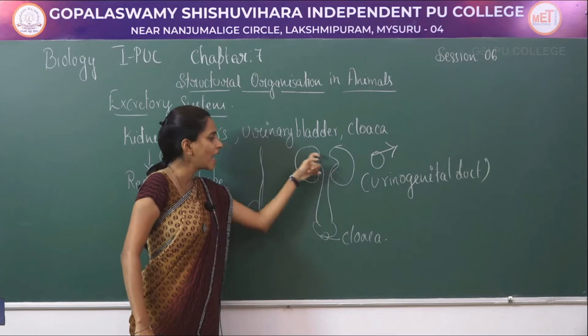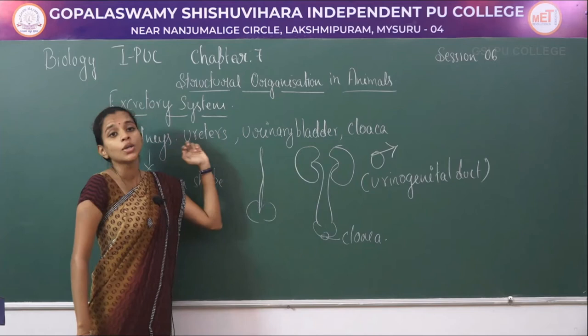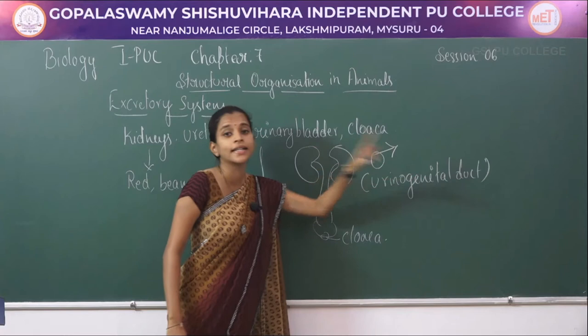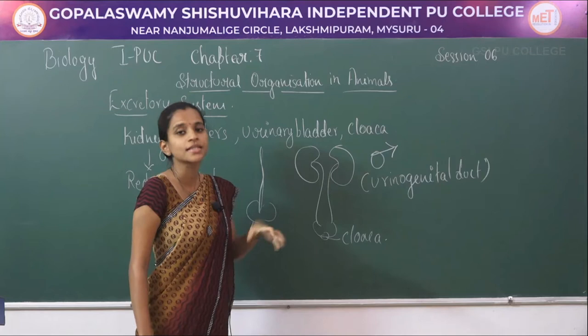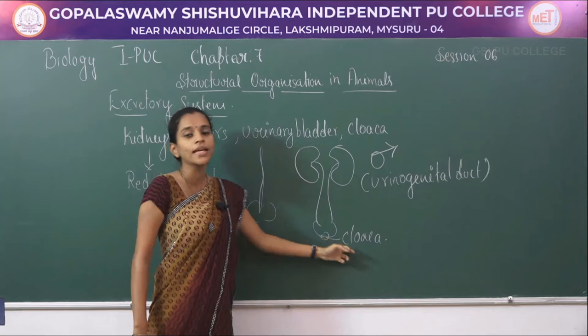In male frogs, the pair of kidneys have tube-like structures called ureters, commonly called the urinogenital duct because it is a common tube carrying both sperm and urine. These get collected in the bladder for storage and are excreted out through a common opening called the cloaca.